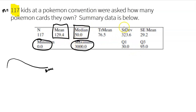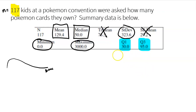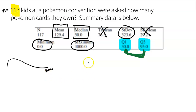The standard deviation was 323.6 — large because of that huge outlier. Our quartiles were Q1 = 30 and Q3 = 95. So 50% of the kids had between 30 and 95 Pokemon cards. That just goes to show that the maximum of 3,000 is probably going to be an outlier, because the majority — 50% — were between 30 and 95. Let's actually use our two methods to identify if we have any outliers.